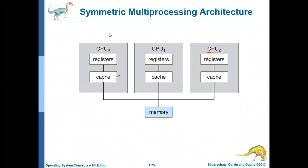The architecture may vary. In some architectures, cache is inside the processor; in others, cache may be outside. This is one example where you have multiple CPUs sharing a single memory, and all these processors are placed in the same system. So this is an example of symmetric multiprocessing architecture.